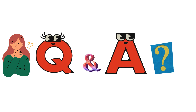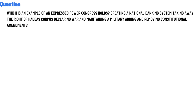Our today's question is: which is an example of an express power Congress holds? Creating a national banking system, taking away the right of the hippies, C, declaring war, and D, the maintaining of military and the removing of constitutional amendments.